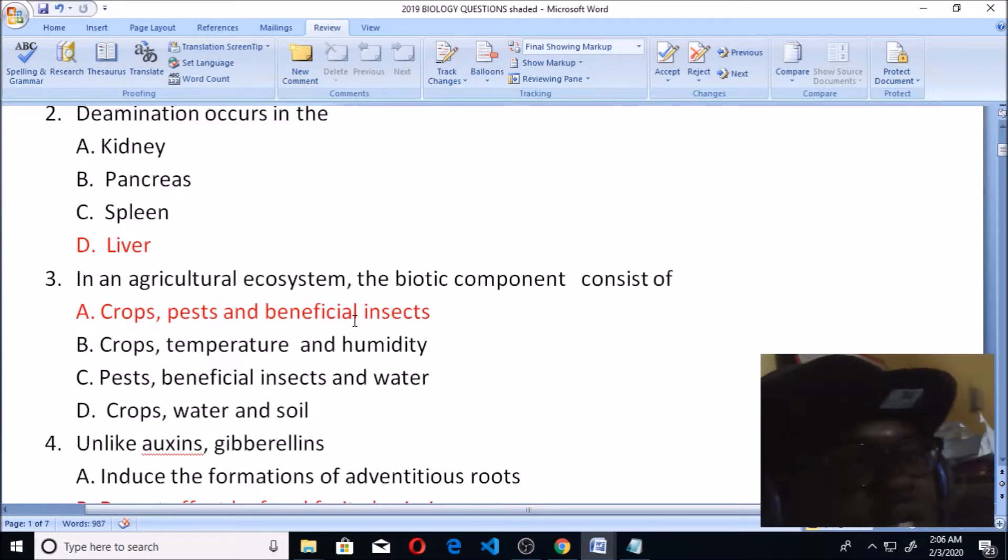So if you take out the first option you have crops, pests and beneficial insects. You see crops are plants, pests are animals, insects are also animals. So you have option A having plants and animals. So the word here that you look at is biotic - it has to be plants or animals, living things. But in the second option you have crops, temperature - temperature is not a living thing, humidity is not, so it cannot be the answer.